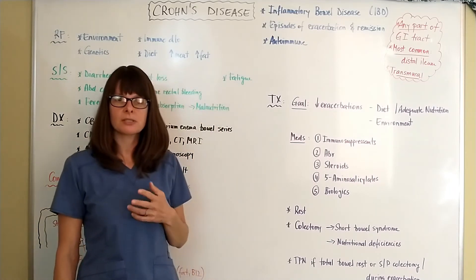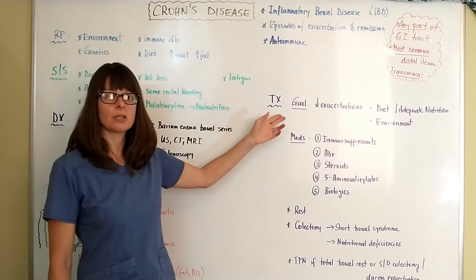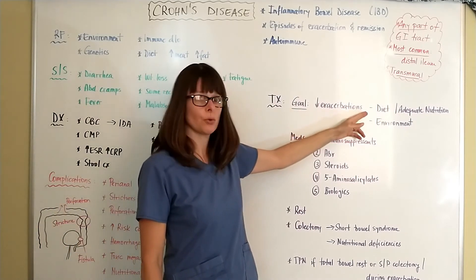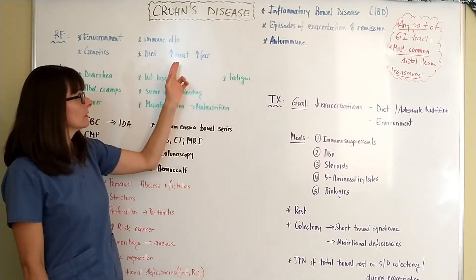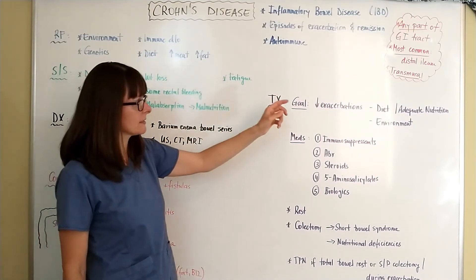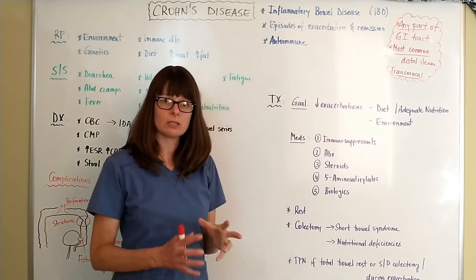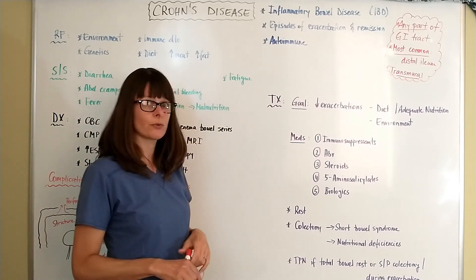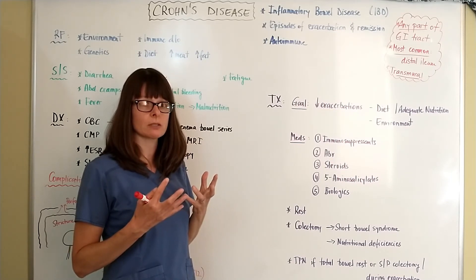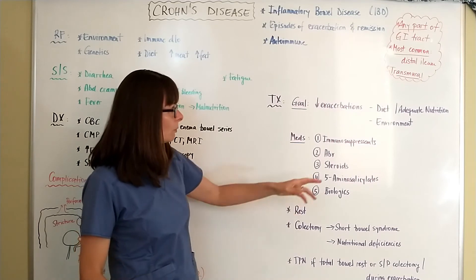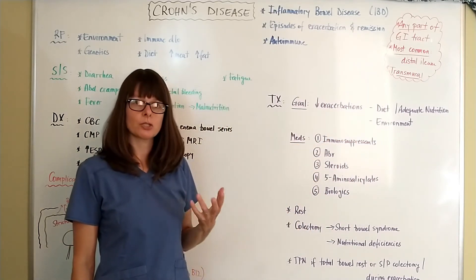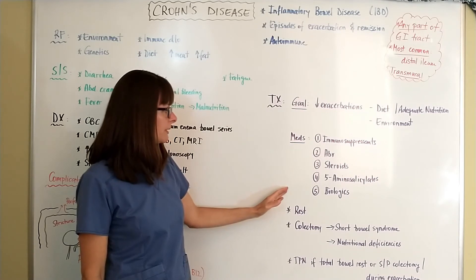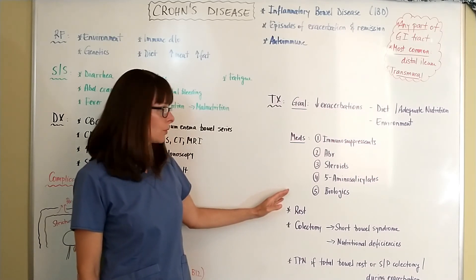For treatment, since Crohn's is an autoimmune disorder, there is typically no cure, but the goal is to manage and decrease exacerbations. First, we educate patients to consume an adequate diet that eliminates or reduces meat and fat, while ensuring adequate nutrition given the risk of malabsorption. We can also decrease environmental risk factors such as smoking and pollution. There are five different types of medications used in the treatment of Crohn's disease.